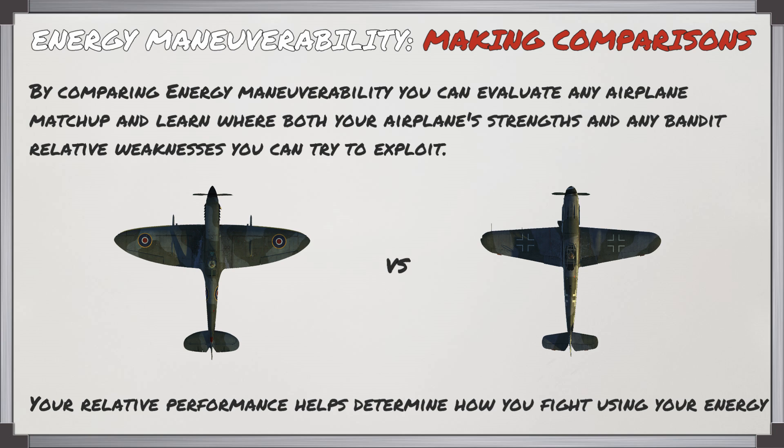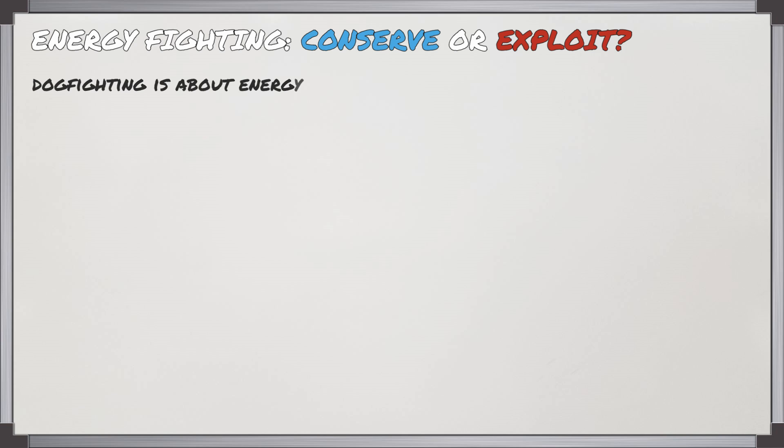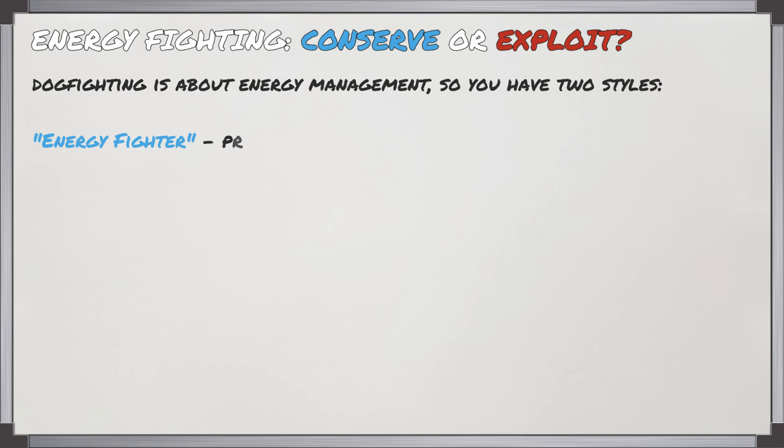By being able to compare energy maneuverability, you can evaluate any airplane matchup and learn where the airplane's strengths are and where the bandit's weaknesses are relative to you, so you might be able to exploit those. It's your relative performance which helps determine how you want to fight using your energy. All dogfighting is energy fighting, but it's about energy management, and you have two main styles to achieve that.